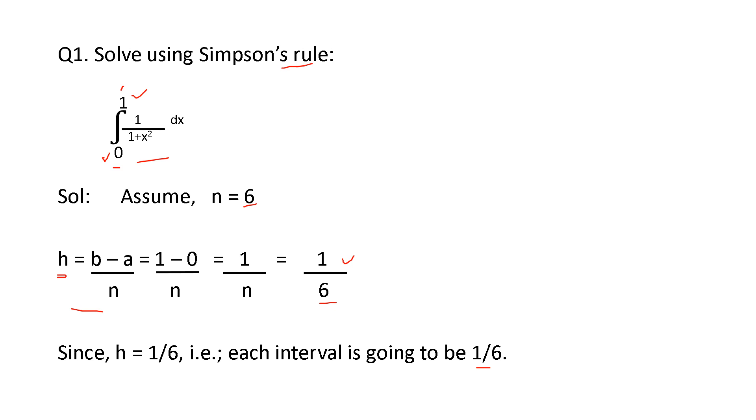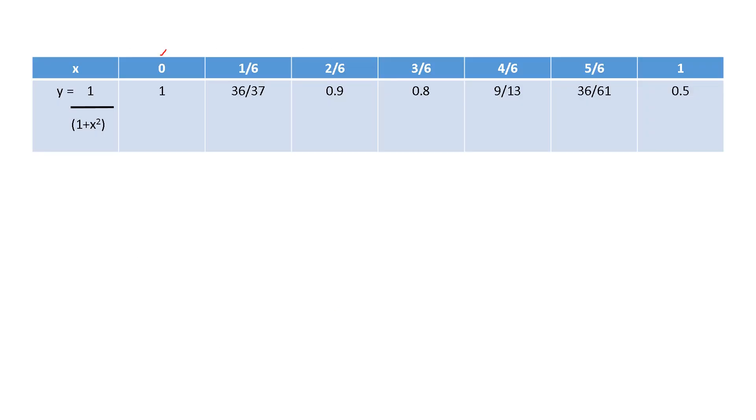Let's see. First value is 0 and the last value is 1. With the help of that, you have to create the table x and y. Why you know? That is the question, 1 by 1 plus x squared. First, you have to find the value of x. Starting is 0. And then, we found h as 1 by 6. h is equal to 1 by 6. We got.